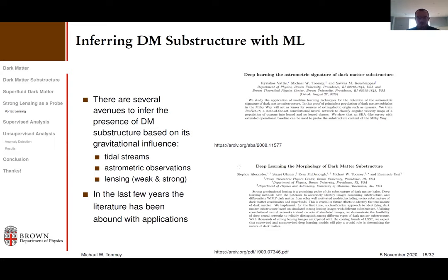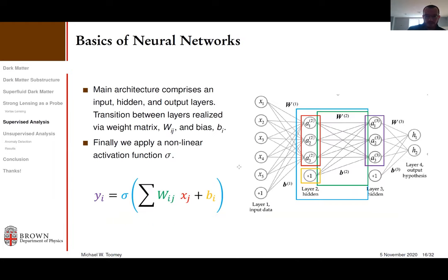People have done this in different regimes. Strong lensing is one method; people can also look at tidal streams and astrometric observations. Here are a couple of papers on this work: one is our initial supervised work, and there's other work with Professor Kushiapas and Kyriakos on looking at astrometric signatures — background quasars and subhalos in our own galaxy. There's a decent amount of work in this regime, but most of these actually all work under the supervised umbrella of machine learning.